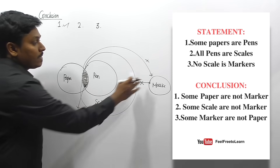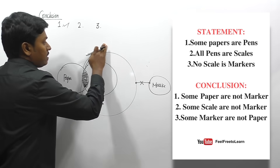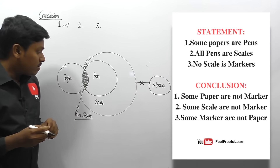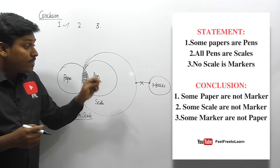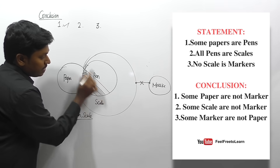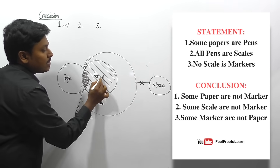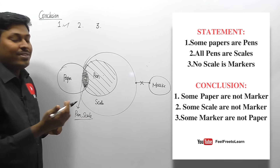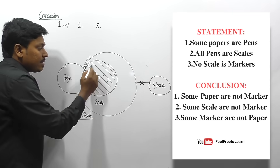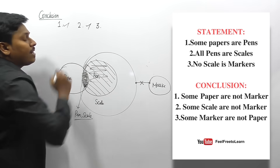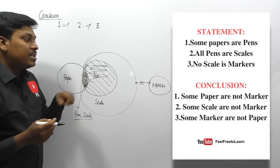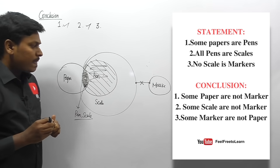Conclusion two: 'some scale are not marker.' Read the first two words: 'some scale.' Some scale will be a specific region. They say this region is not a marker — that's exactly correct since there is no possible connection between pen and marker here. So some scale (this region) is not a marker is correct. Conclusion two is true.